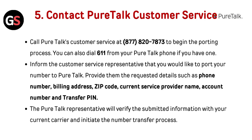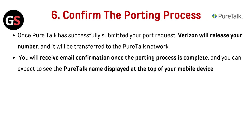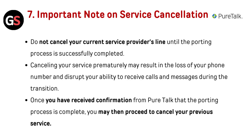The PureTalk representative will verify the submitted information with your current carrier and initiate the number transfer process. Once PureTalk has successfully submitted your port request, Verizon will release your number and it will be transferred to the PureTalk network. You will receive email confirmation once the porting process is complete, and you can expect to see the PureTalk name displayed at the top of your mobile device.